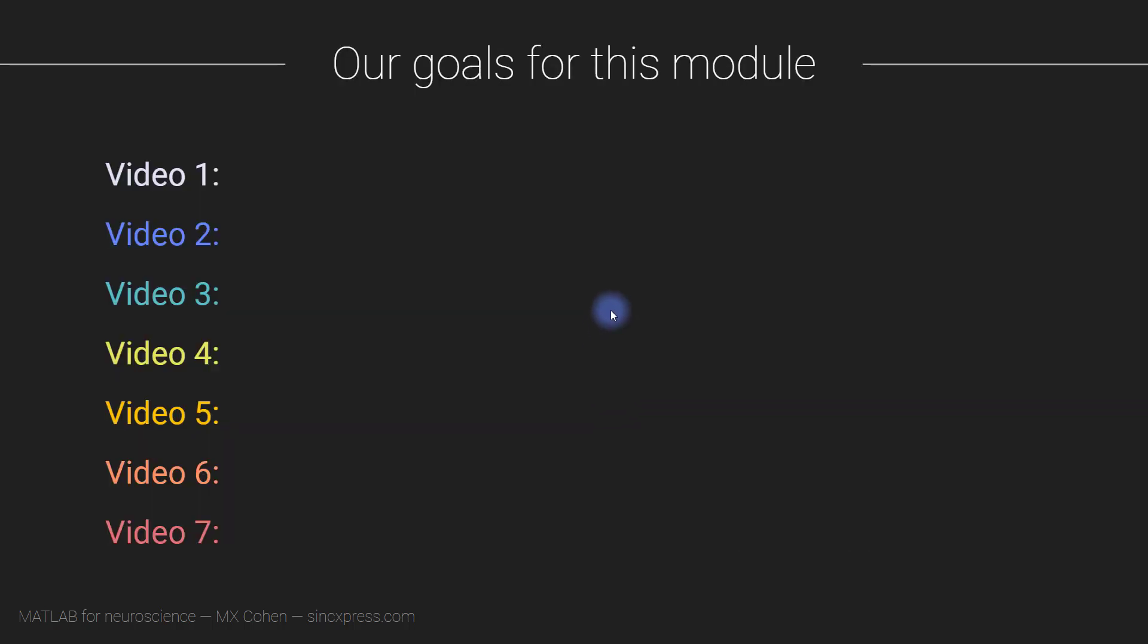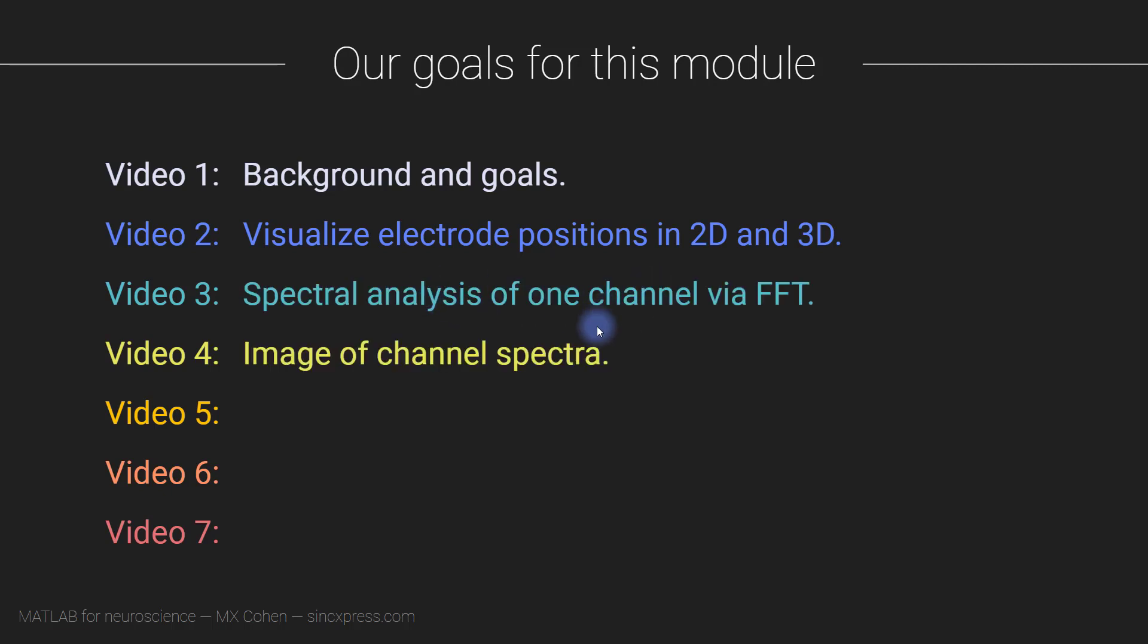All right, so that is the end of video one. In the next video, we are going to do some visualizations of the EEG electrode positions. Then we'll move to spectral analysis of data from a single channel and from all of the channels. And from there, we will investigate topographical maps of the SSVEP power.